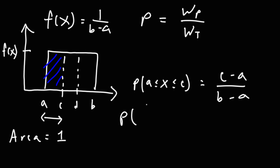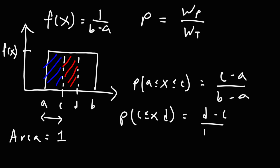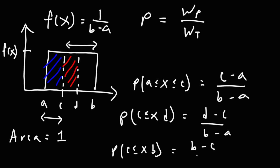If we want to find the probability that x is between c and d, the width of the shaded region is d minus c, divided by the total width b minus a. If we want the probability that x lies between c and b, the partial width is b minus c, divided by the total width b minus a. When you see it from that perspective, it's very easy to write the formulas needed to determine the probability of where x is located.